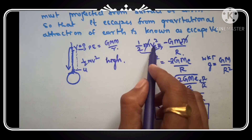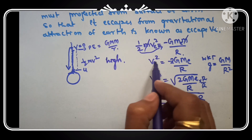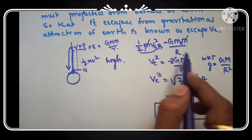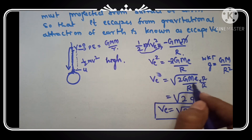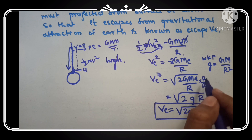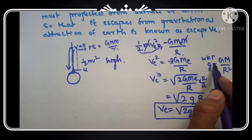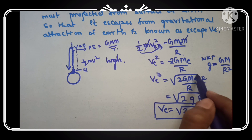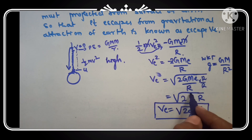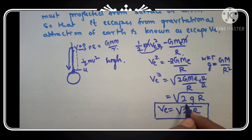Multiplying by R/R and using the fact that acceleration due to gravity g = GM/R², we can substitute: vₑ = √(2gR). This is the escape velocity expression, where vₑ = √(2gR).